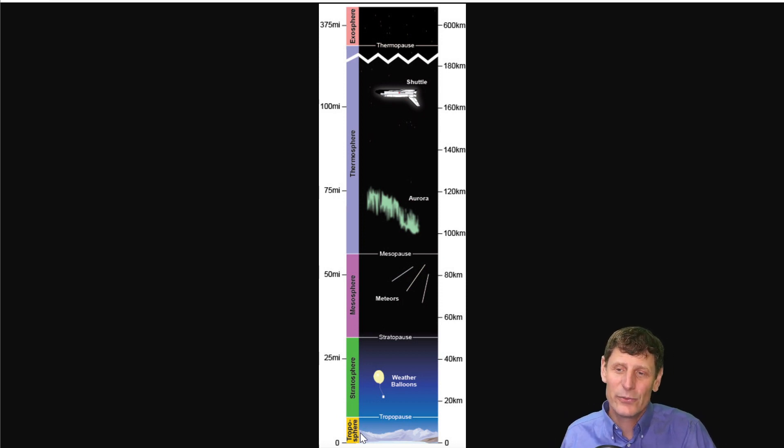Closest to the Earth we have the troposphere, separated from the stratosphere by the tropopause. The stratosphere goes up to around 30 miles. The troposphere and the tropopause varies with latitude, but it's somewhere around 10 to 12 miles above the surface. Above the stratosphere is the mesosphere, separated from the stratosphere by the stratopause. The mesopause is above that, and then the thermosphere outside of that.